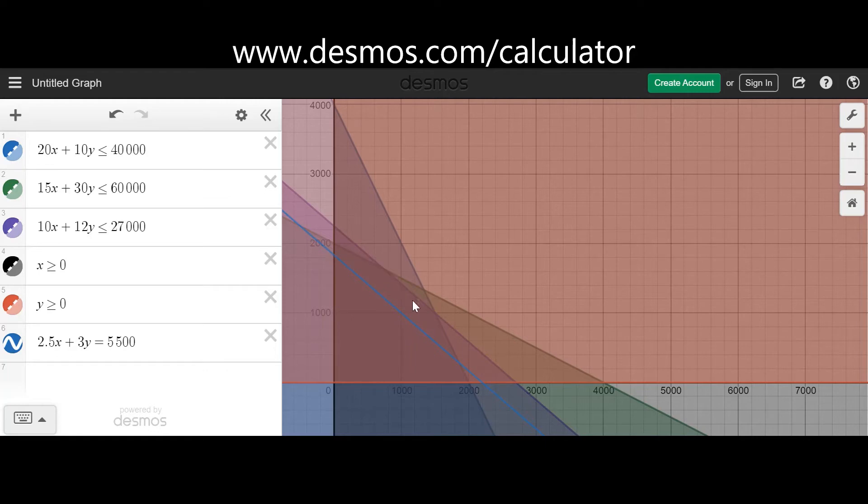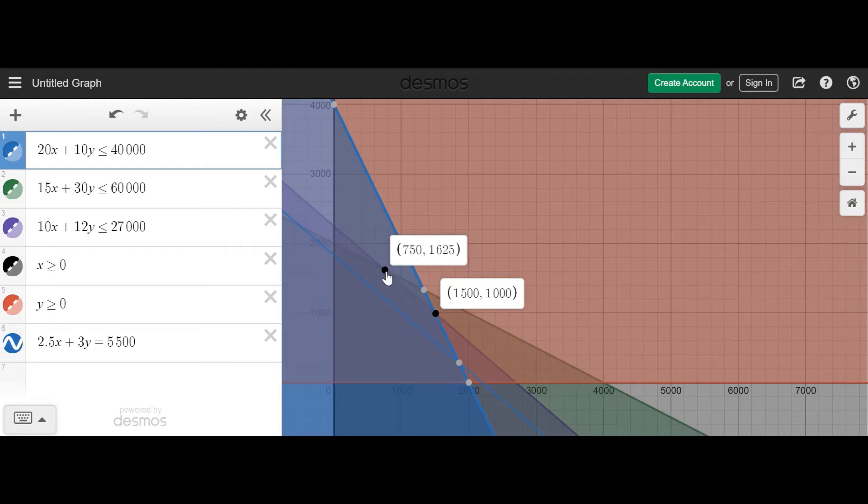Then you will see that it will have multiple solutions between these two intercepts here, because that's inside the feasible region. If I click on these two, I now know the multiple solutions will lie along this line segment. The x value is in between 750 all the way up to 1,500, and the y value is from 1,000 all the way up to 1,625. We cannot have decimal number of packaging, so we will go with integer values as well.